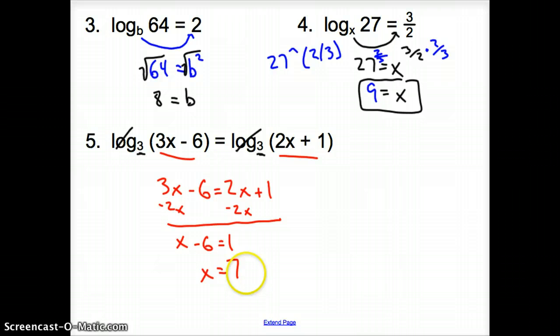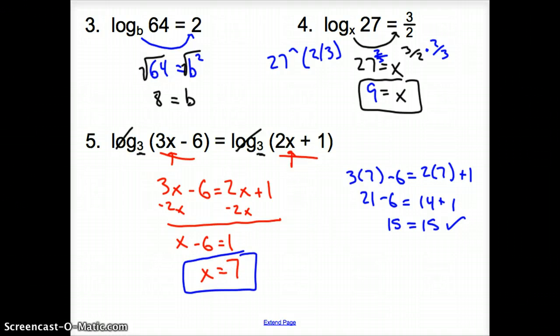Now before we square it up and say that's our answer, we have to plug that 7 to check our answer to make sure it works. So when we check, we go 3 times 7 minus 6, and that's going to equal 2 times 7 plus 1. Here we have 21 minus 6, and then 14 plus 1, and that's 15 equals 15. Yes, that equals the same thing, so x equals 7 is our guy.